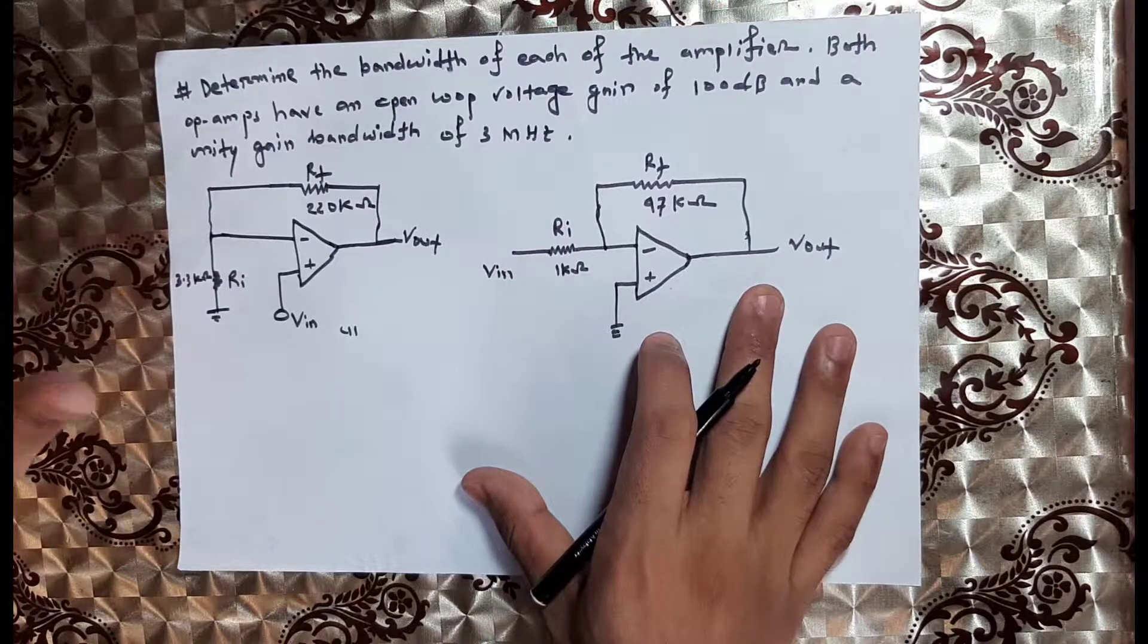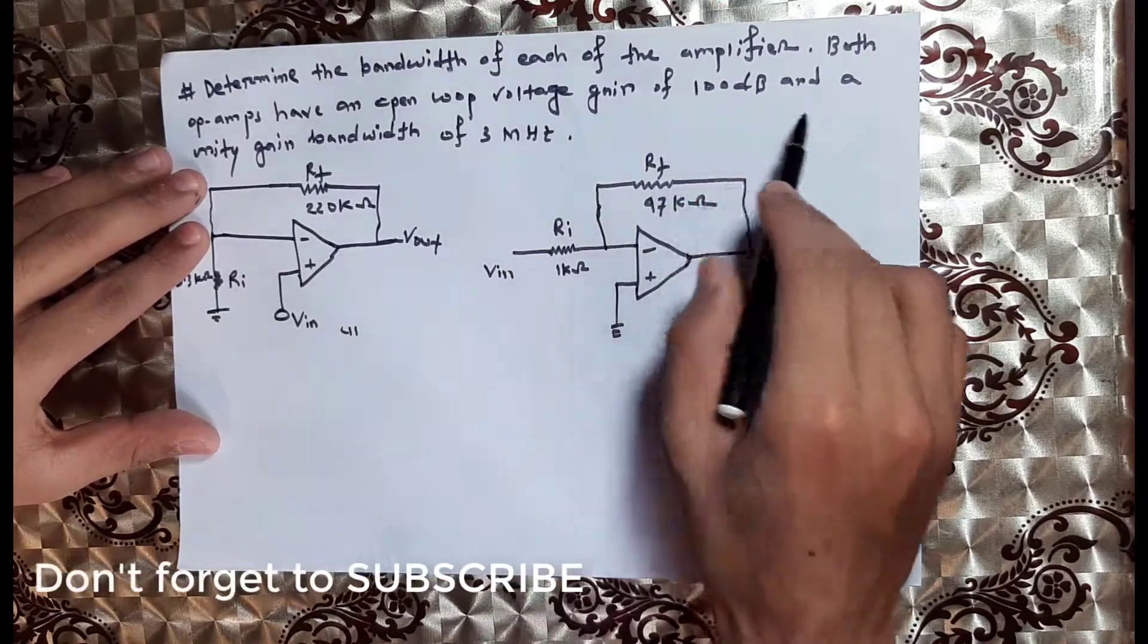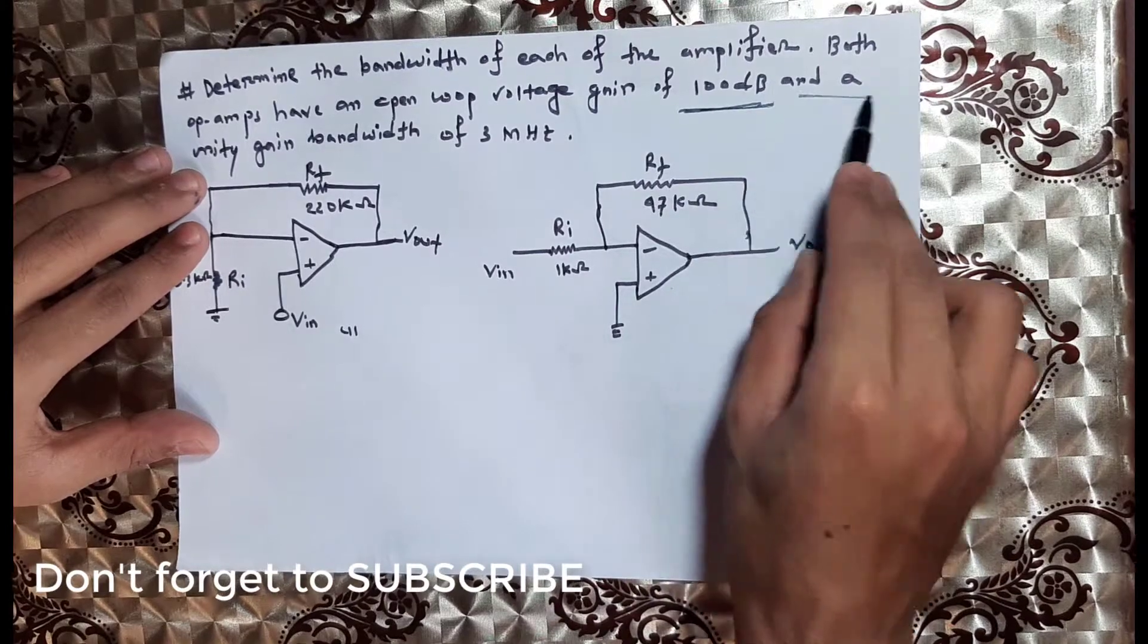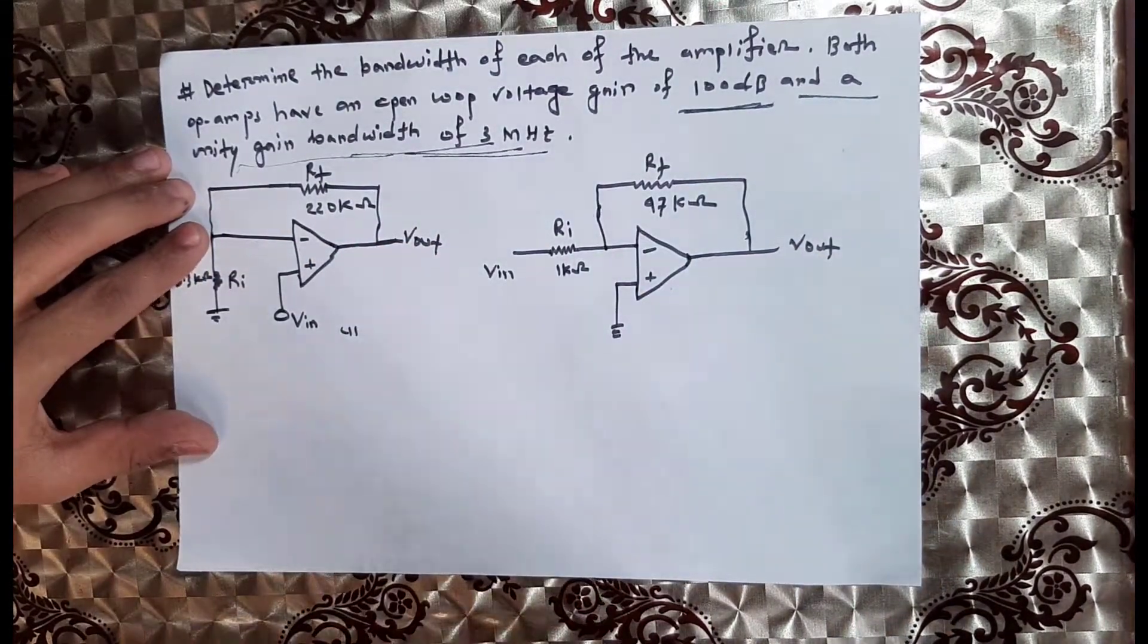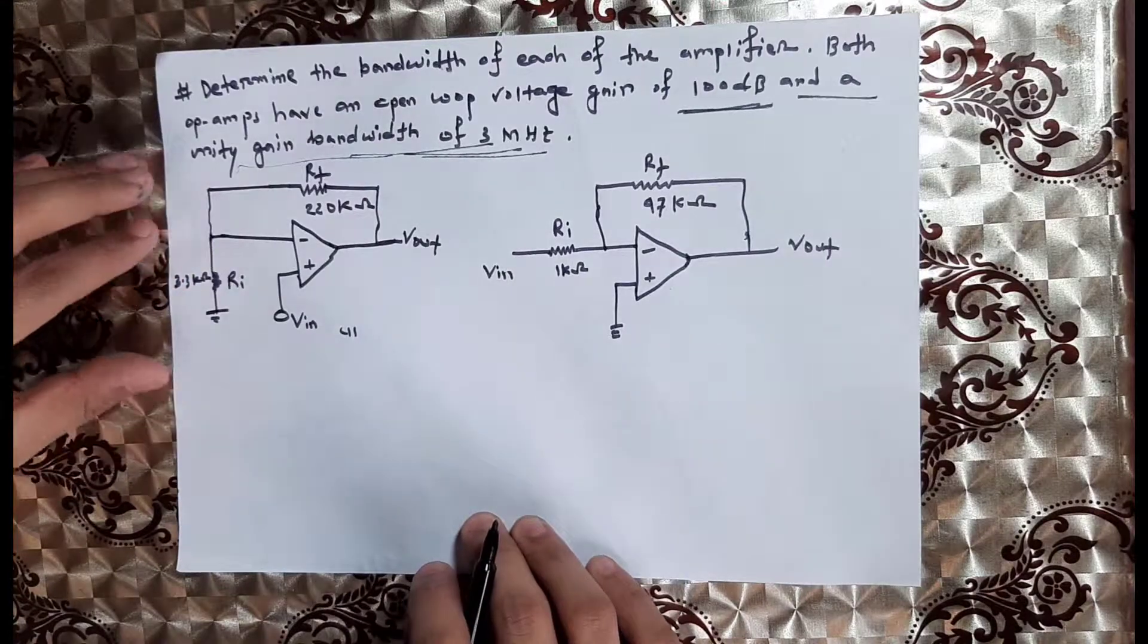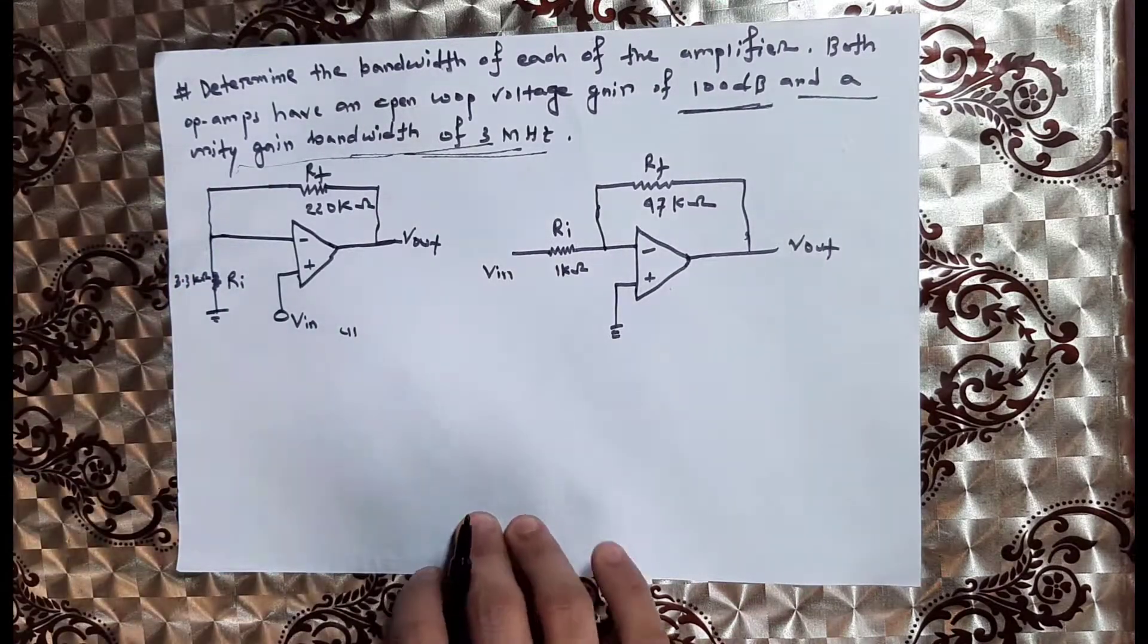Both op amps have an open loop voltage gain of 80 decibels and a unity gain bandwidth of 3 megahertz. Now let me show you the basic theory.